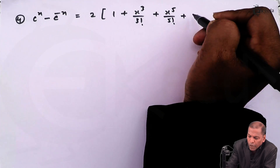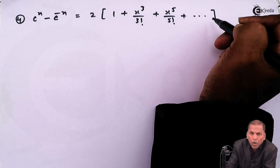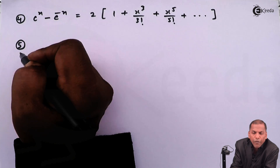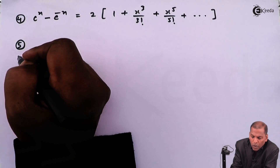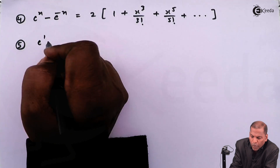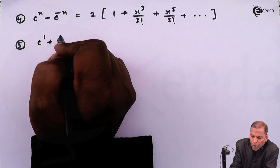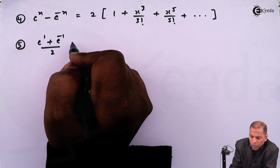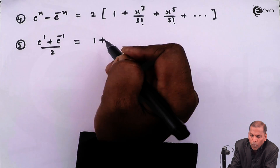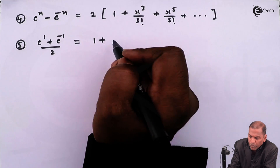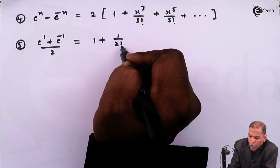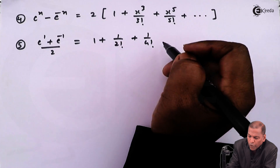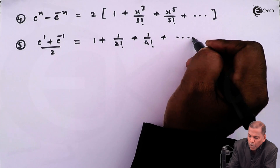Result number 5 is e raise 1 plus e raise minus 1, upon 2. That is equal to 1 plus 1 upon 2 factorial plus 1 upon 4 factorial plus 1 upon 6 factorial, and going on.